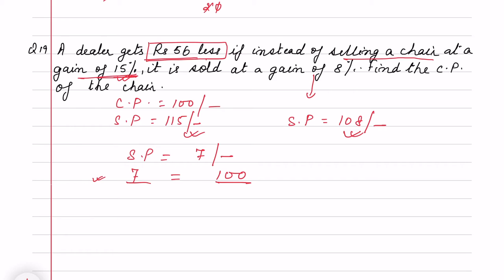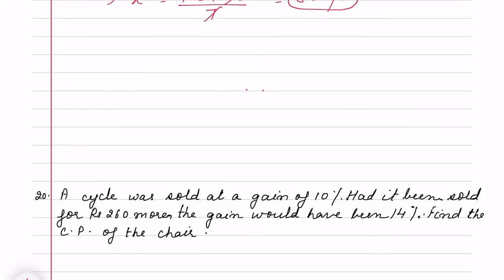But he gets 56 rupees less - the difference between the selling prices at 15% and 8% is 56. So I have to find out the cost price. If you cross multiply, 7 divided by 100 equals 56 divided by x, so it will be 800. You see, very quickly we solve this type of question.